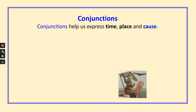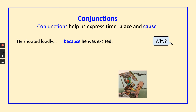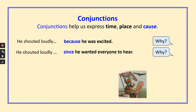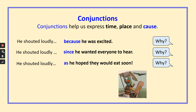Conjunctions can also help us to express cause — why something happened. He shouted loudly because he was excited. He shouted loudly since he wanted everyone to hear. He shouted loudly as he hoped they would eat soon. Can you come up with your own endings? He shouted loudly because...? He shouted loudly since...? He shouted loudly as...?